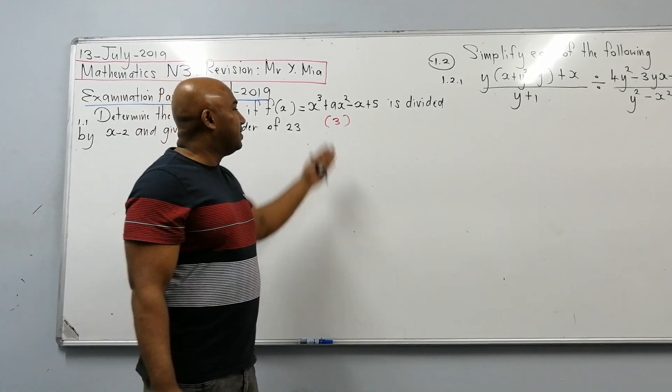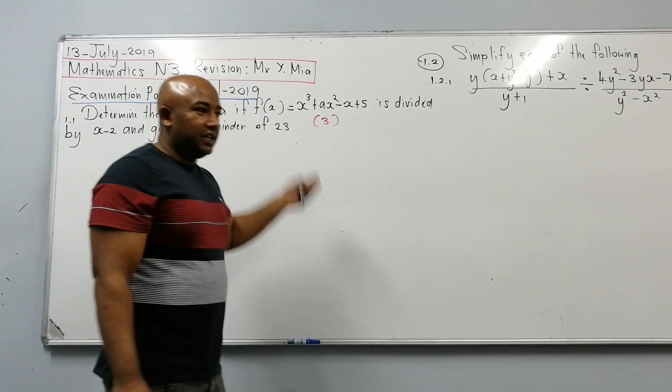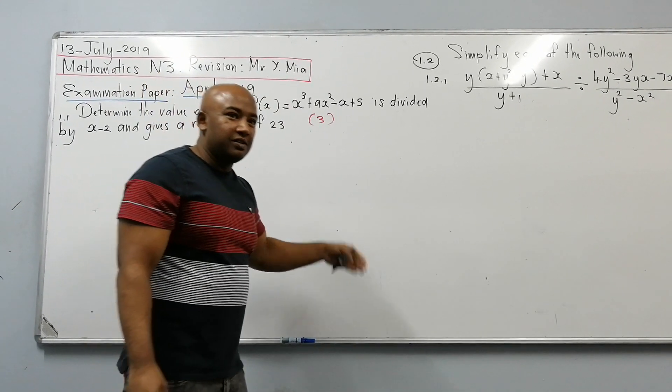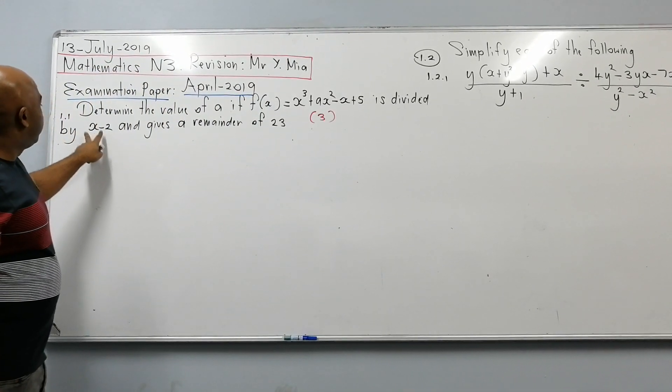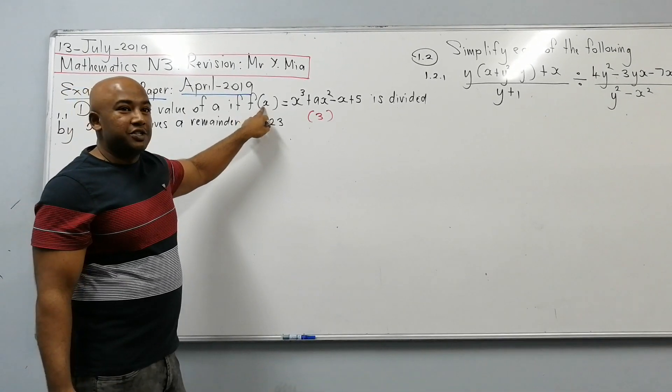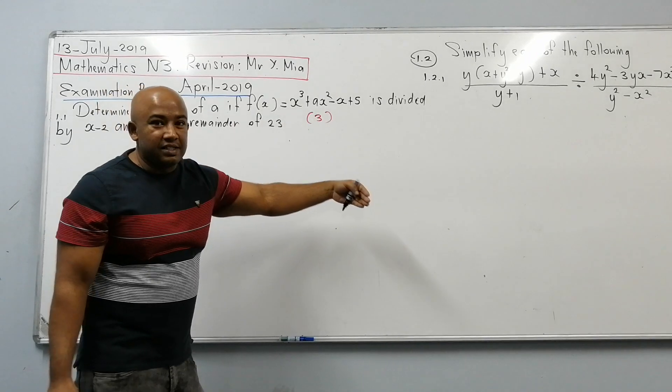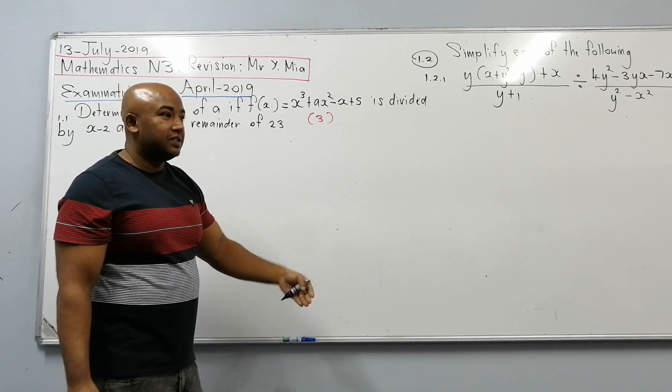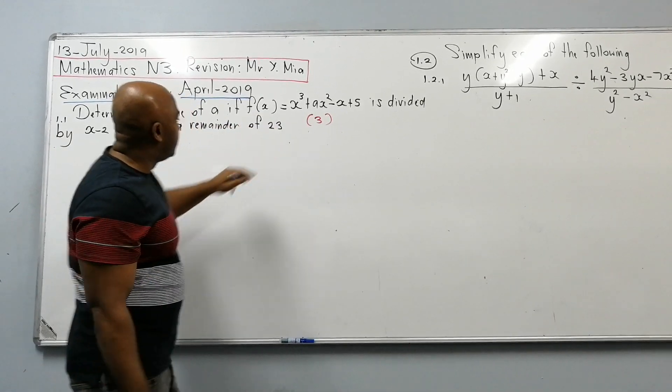So we are not going to go and use long division. We can use long division, but it's going to take too long, so we use the remainder theorem. So if it's divided by x minus 2, then what value can I substitute here? 2. And what will the answer equal to? 23.